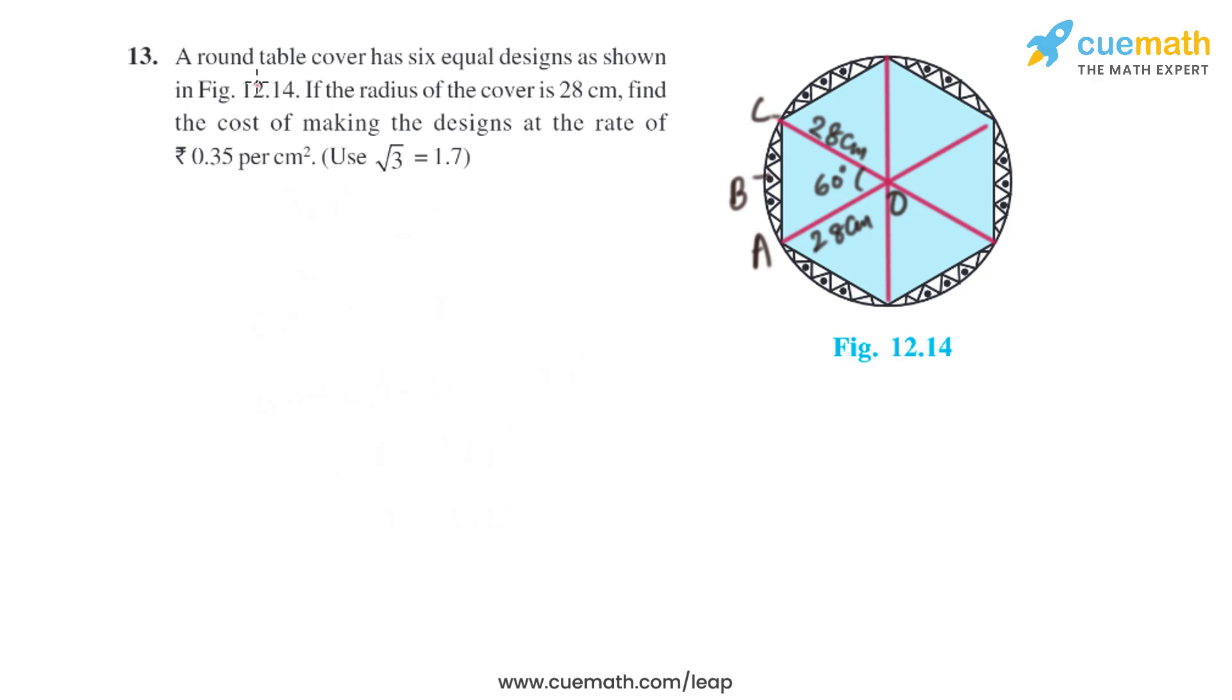Question 13 of this exercise says a round table cover has six equal designs as shown in figure. If the radius of the cover is 28 centimeters, find the cost of making the designs at the rate of rupees 0.35 per square centimeter.